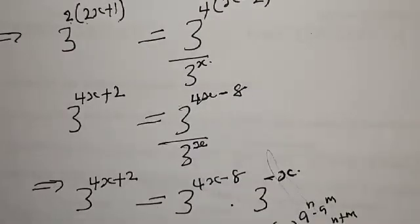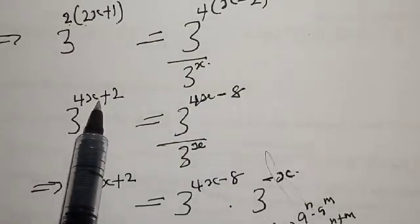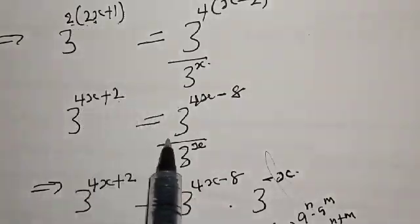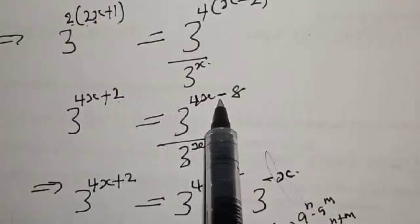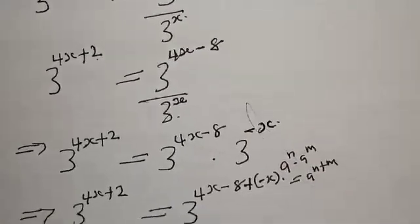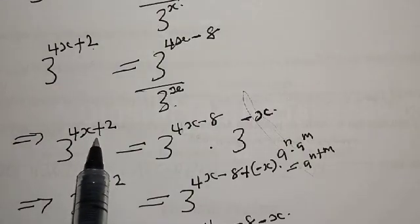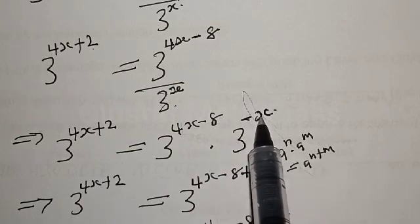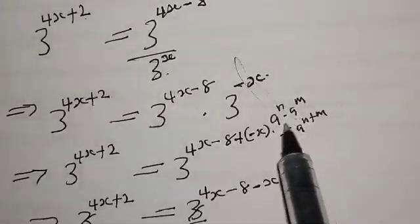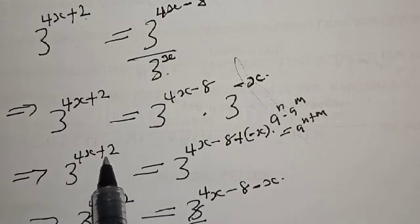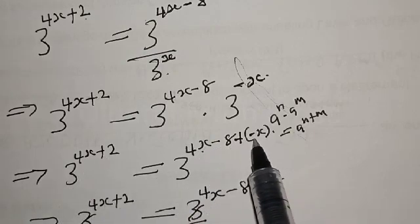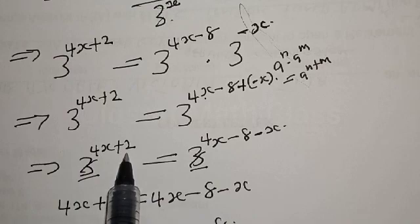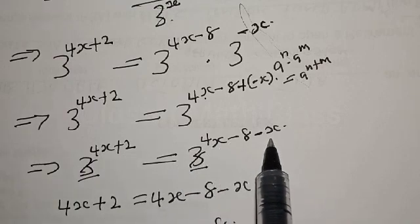Then we have 3 raised to power 4X plus 2 — that is 2 times 2X is 4X, and 2 times 1 is 2. Opening the bracket, we have 3 raised to power 4X minus 8, over 3 raised to power X. Then 3 raised to power 4X plus 2 equals 3 raised to power 4X minus 8, multiplied by 3 raised to power minus X. Applying the law of indices, we have 3 raised to power 4X plus 2 equals 3 raised to power 4X minus 8 minus X.